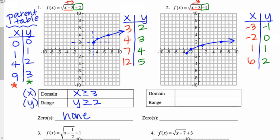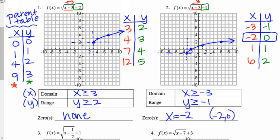Now I'll graph these. (−3, −1) is over here, (−2, 0), (1, 1), and (6, 2). There's my graph. Domain: I'm starting at the x value of negative 3 and getting bigger, so x ≥ −3. Range: I'm starting at y = −1, so y ≥ −1, including every y value bigger than that. For zeros, where is my graph crossing the x-axis? Looking at the new table, I'm crossing at x = −2. That's the zero.